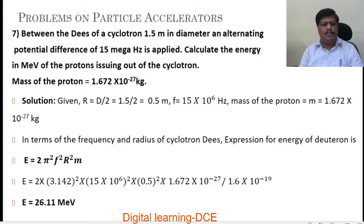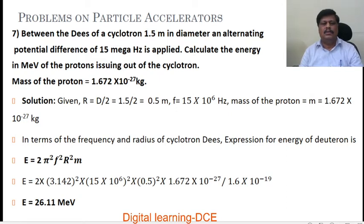Let us discuss problem number 7. Between the D's of the cyclotron, 1.5 meter in diameter, an alternating potential difference of 15 MHz is applied. Calculate the energy in MeV of the protons issuing out of the cyclotron. Mass of the proton equals 1.67 into 10 power minus 27 kg. Given diameter, we have to calculate the radius of the D's, so r equals d by 2.